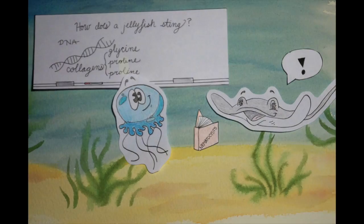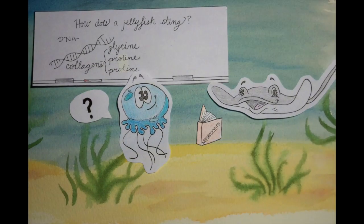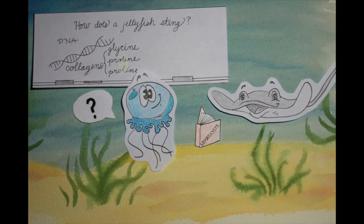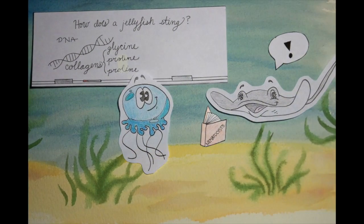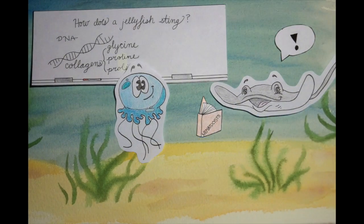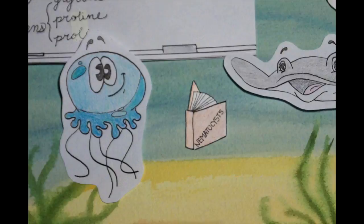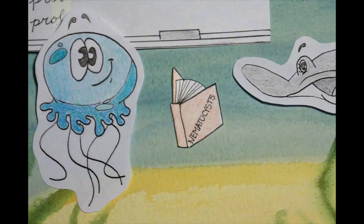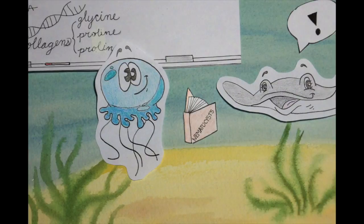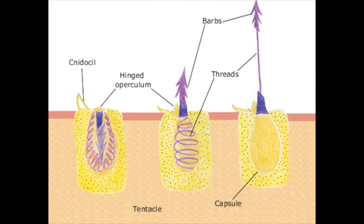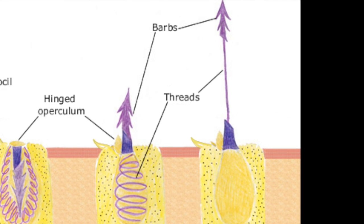Hey, Ms. Ray. Hello, Squishy. How are you? Not too good, Ms. Ray. I'm really confused about how a jellyfish sting works, since I can't sting at all. Don't worry, Squishy — I can teach you all about how a jellyfish stings. First of all, jellyfish have stinging cells on their tentacles called nematocysts. I just drew up a diagram of them for our lesson tomorrow. These stinging cells shoot out a thread of venom, which is why it hurts when other jellyfish sting something.